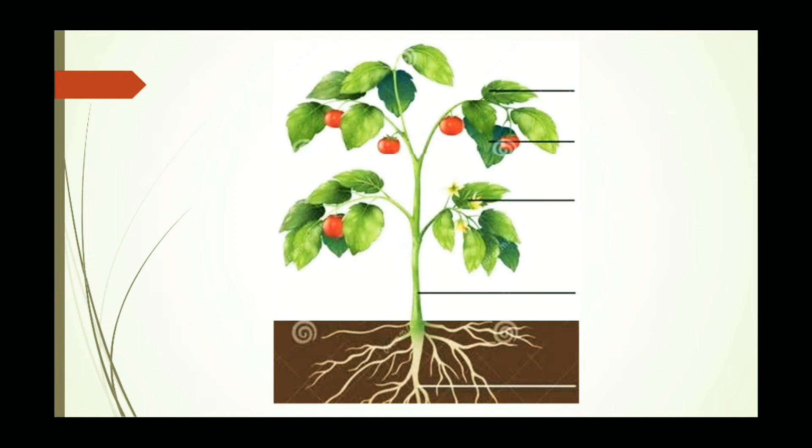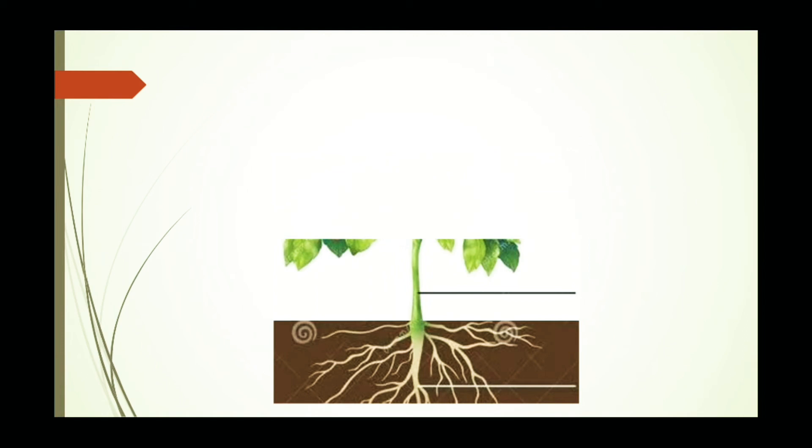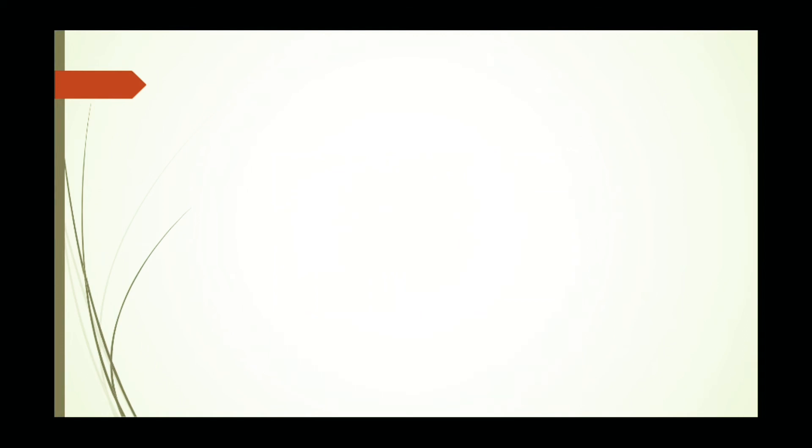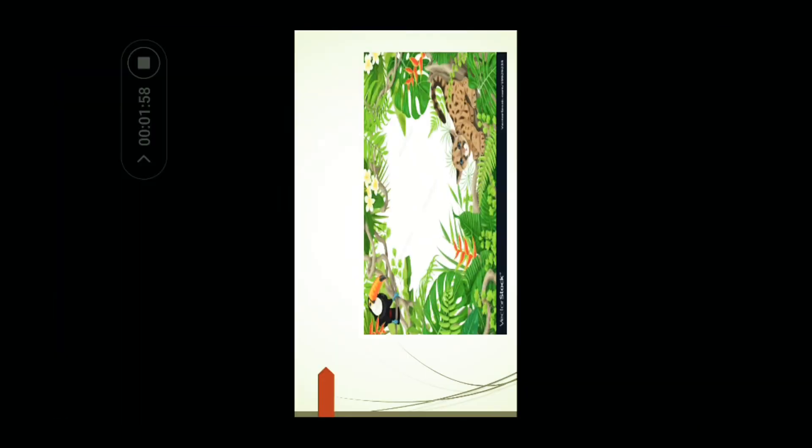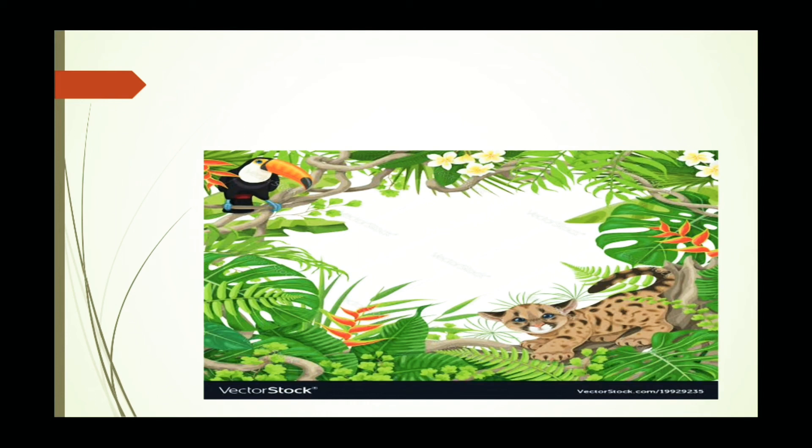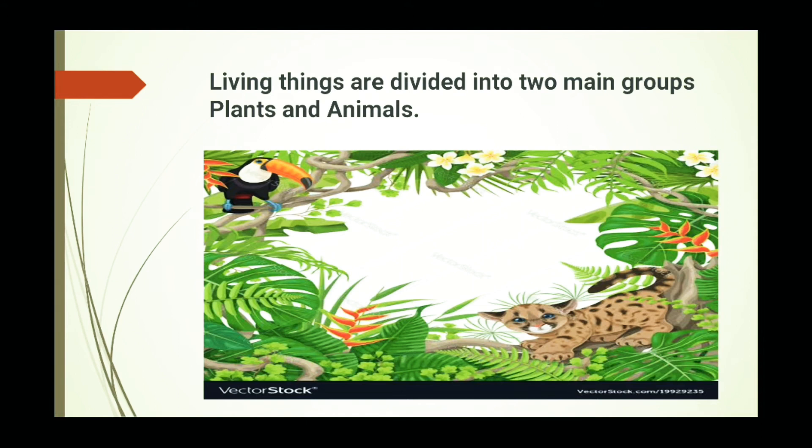What is in this chapter? See, this is a plant of a tomato. See carefully, one by one it disappears. What is in this picture? In this picture you can see animal, bird and plants and trees. Very good. Living things are divided into two main groups: plants and animals.